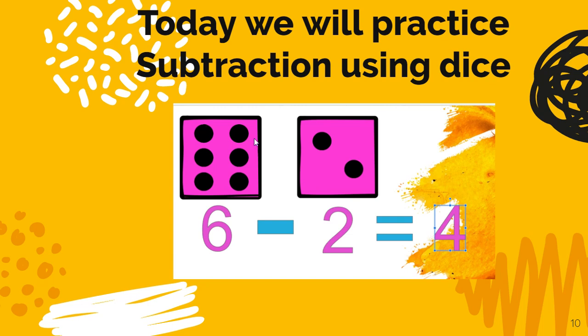So let's look at this one. 6 minus 2. So I have to only look at my first dice, and I have to think of what would happen if I covered up two dots on that 6. I would be left with 4.